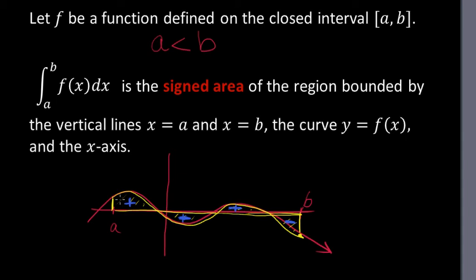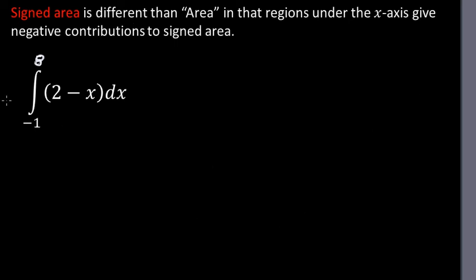So to calculate the signed area, if the area of this region was a, and this region was b, and this region was c, and this region was d, then a, b, c, and d would be positive numbers, they are areas. But the signed area would be calculated by adding in a, subtracting b, adding c, subtracting d. This would be equal to the signed area. So up at the top I've written, signed area is different than area in that regions under the x-axis give negative contributions to the signed area.